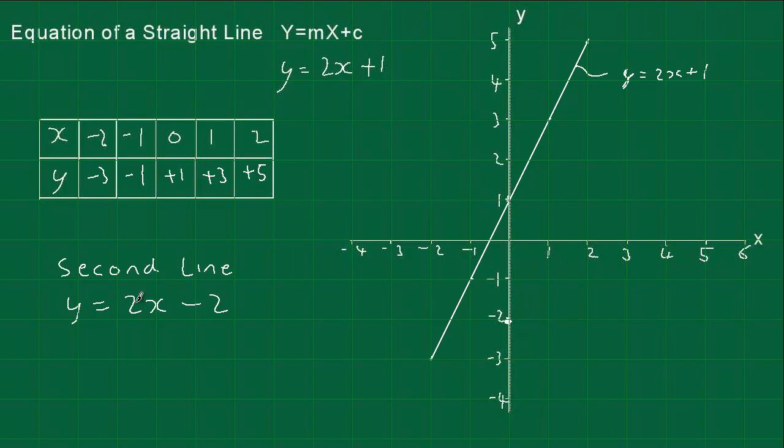And then we've got the gradient is 2, so it means for every one we go across, we go up 2. There's going to be a point there. We go across 1 again and up 2, like that. And of course coming back this way, we can go back that way and down 2. So I'll draw a line there. And my usual way is to label it: y equals 2x minus 2.